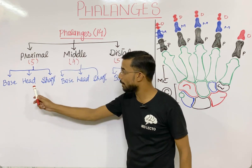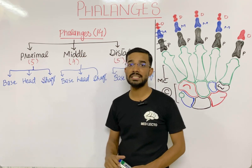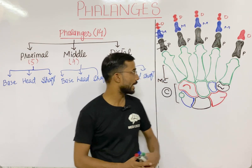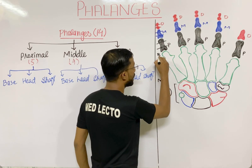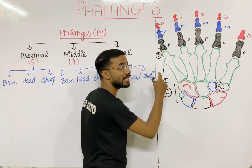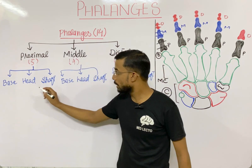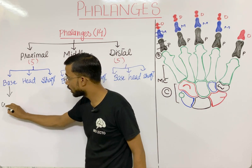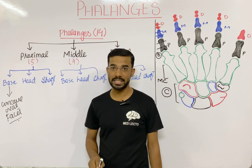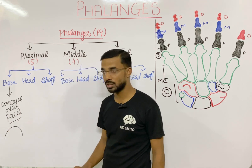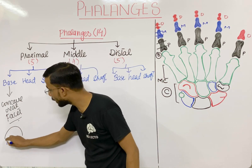The base of the proximal phalanges is concave oval facet shape. This concave facet actually articulates with the metacarpal bones — that is the most important thing to remember about the base of the proximal phalanges.